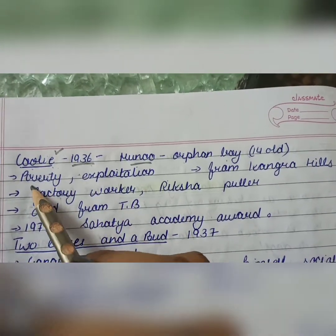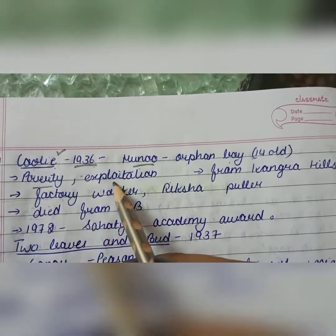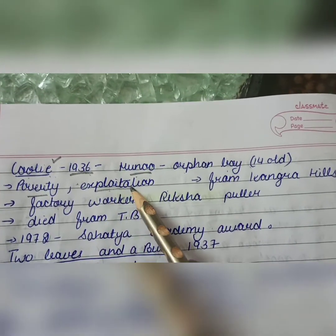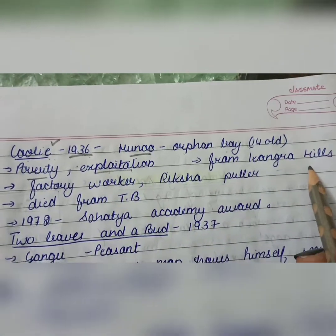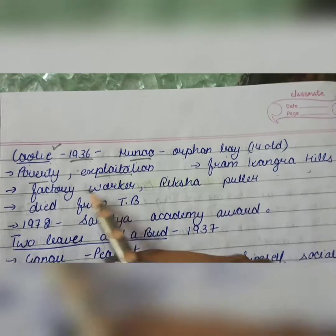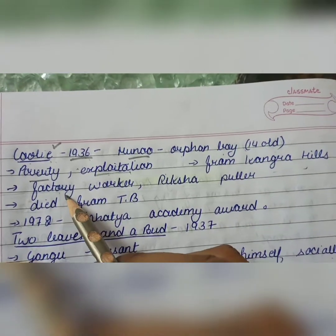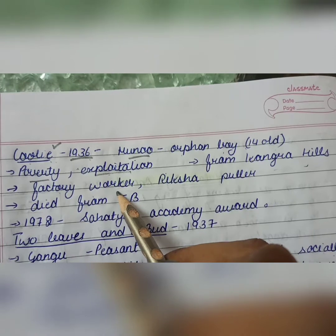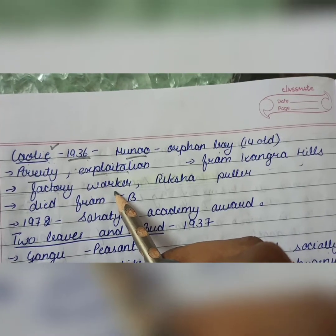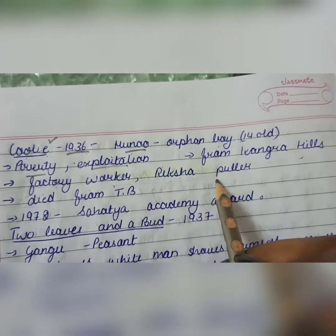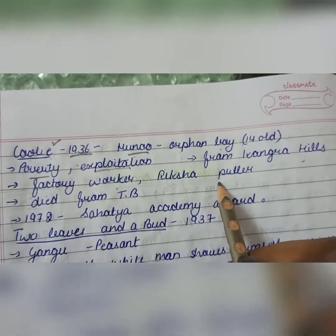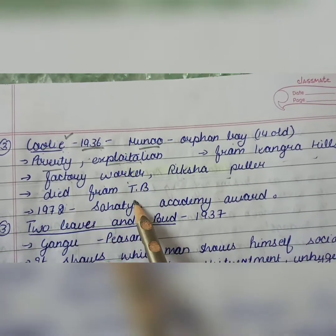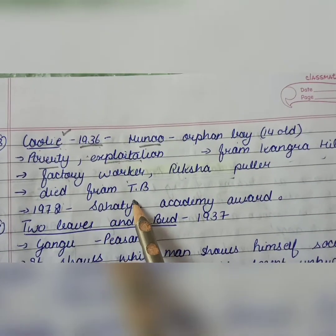This work deals with poverty and exploitation. It is set in Kangda Hills. The work shows factory workers — how they are living and how they are exploited. It also deals with rickshaw pullers, and a girl who dies of TB.